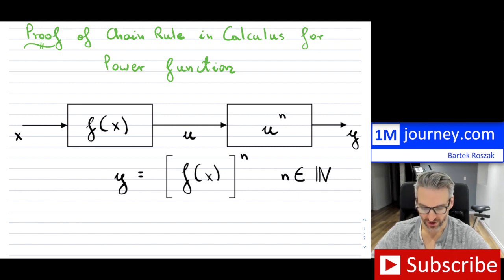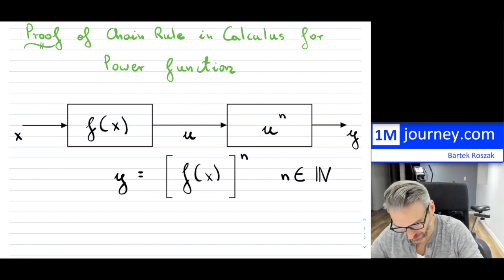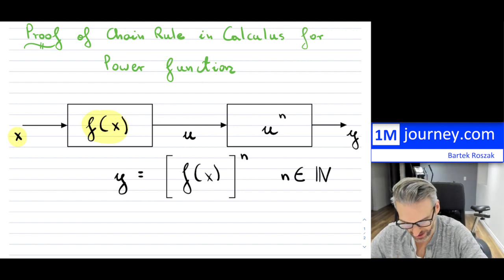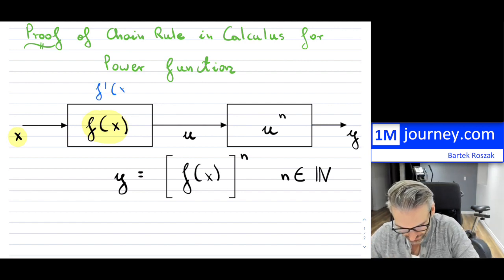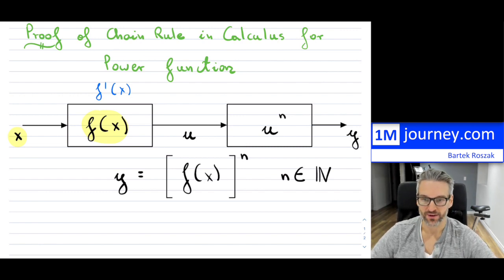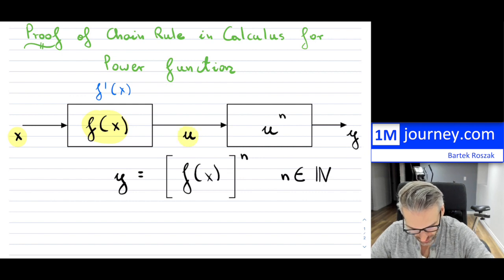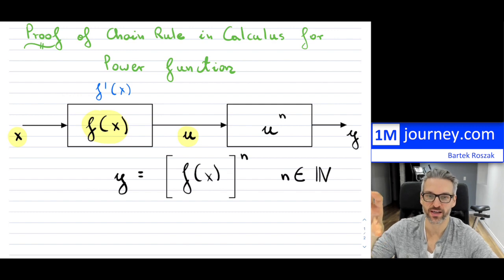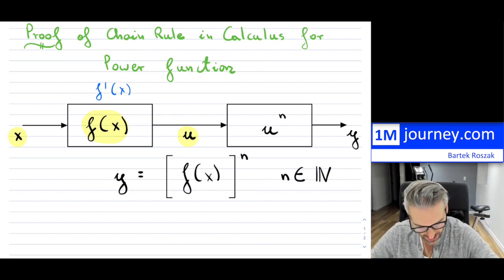So what you see here is something of a schematic. You have our input — our independent variable coming in — we have a function f(x) which is doing something to it. We're going to be assuming that f(x) is differentiable, so that means the derivative exists. You get an output, which is simply f(x), which I'm calling u here. So u really is just f(x), and then what we're doing — this is where the composite functions come in — you have one function and it's being fed into another one, and it turns out that the other function is a power function.